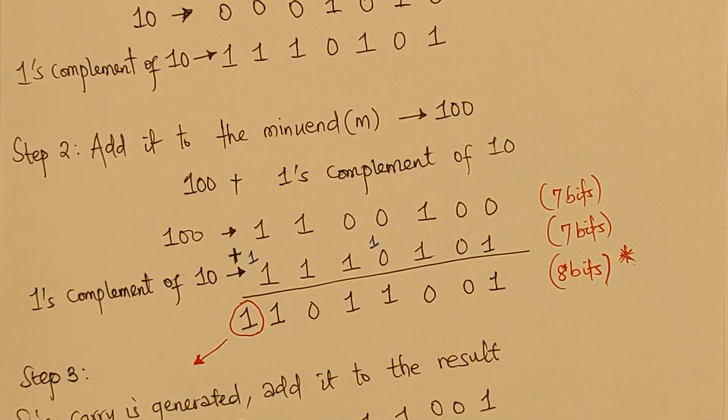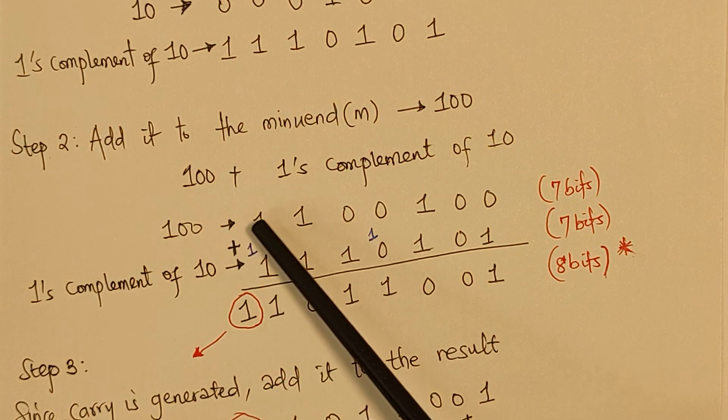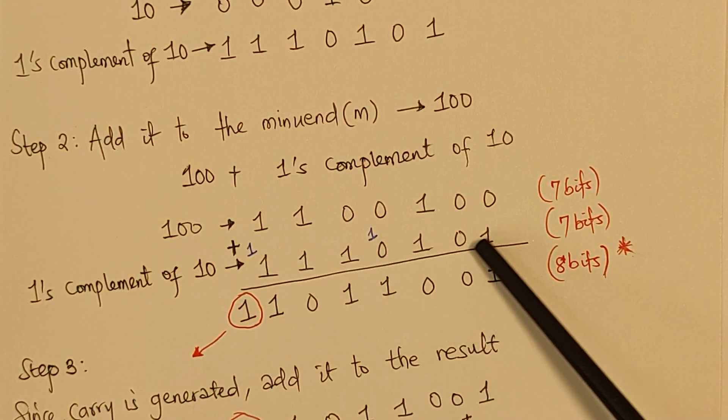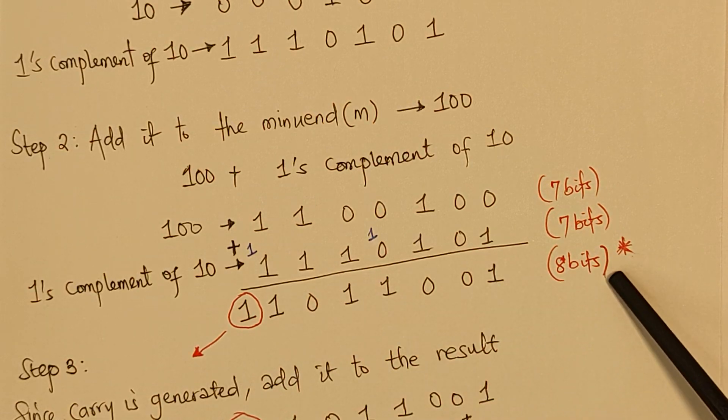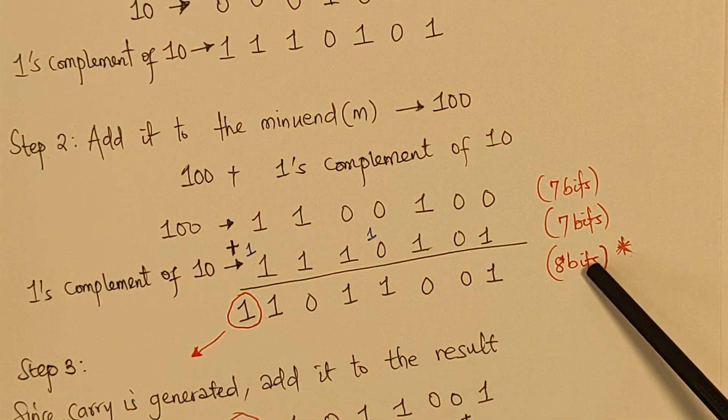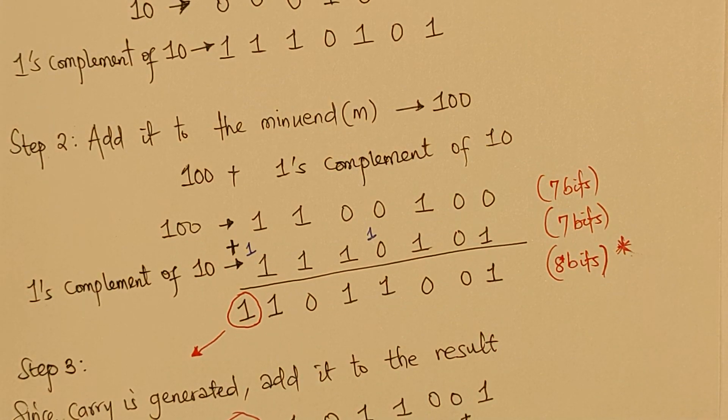Now, how do we really identify carry? Now, take note, 1, 1, 0, 0, 1, 0, 0 is actually in 7 bits. This one is actually in 7 bits, but this one is 8 bits. It means there is a carry. It's not balanced, right? But we want to retain the value in 7 bits.